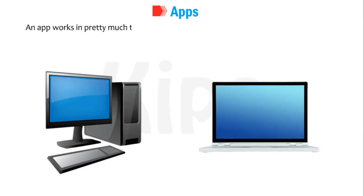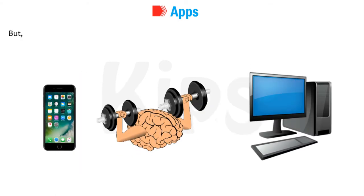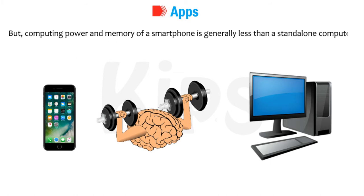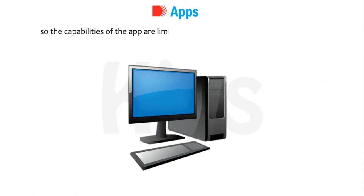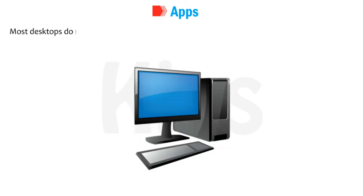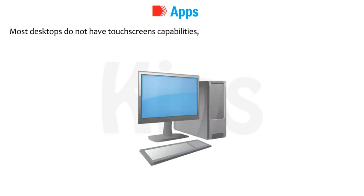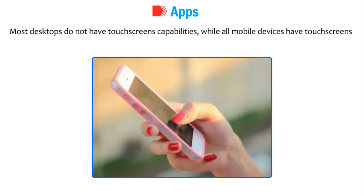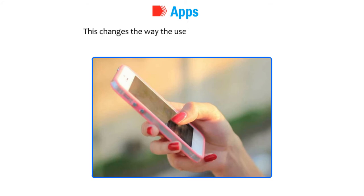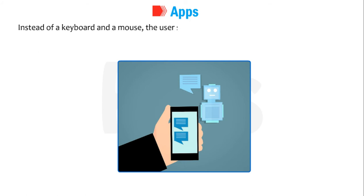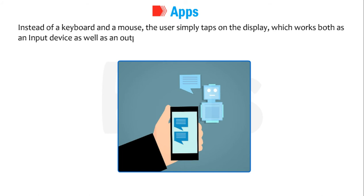Apps work in pretty much the same way as software does on a desktop or laptop. But the computing power and memory of a smartphone is generally less than a standalone computer, so the capabilities of the app are limited compared to similar software running on a PC. Most desktops do not have touchscreen capabilities, while all mobile devices have touchscreens. This changes the way the user interacts with the device — instead of a keyboard and a mouse, the user simply taps on the display, which works both as an input device as well as an output device.